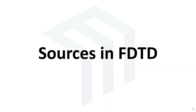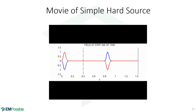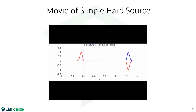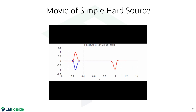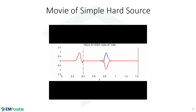Sources in finite difference time domain. A simple hard source literally overwrites a grid value with the source function — in this case a Gaussian pulse. Any backward waves reflect off it; waves can't get through this hard boundary, and that is usually a problem. It's the absolute simplest source type, but I've never actually seen it used in practice.